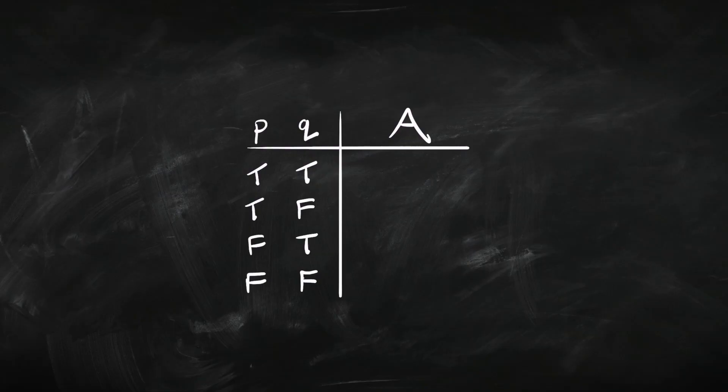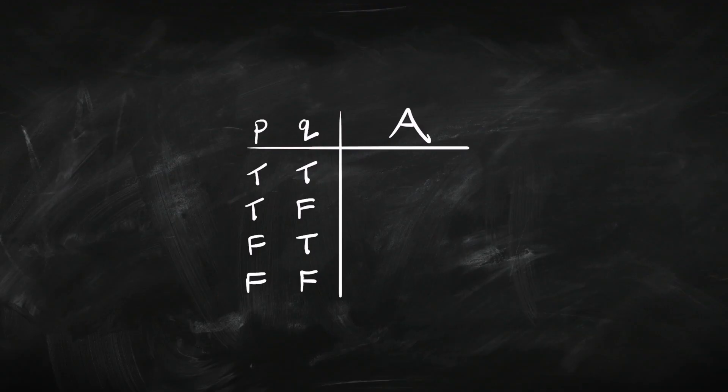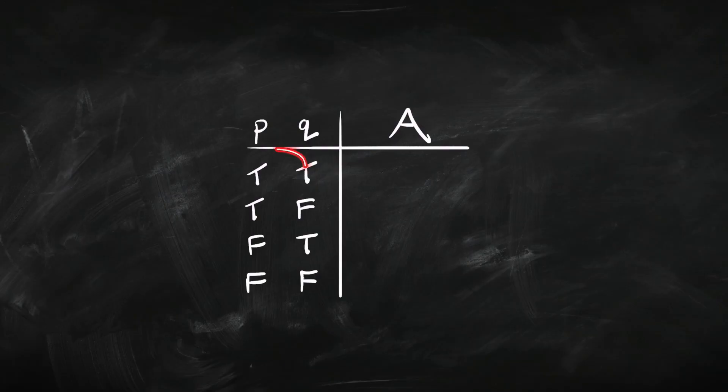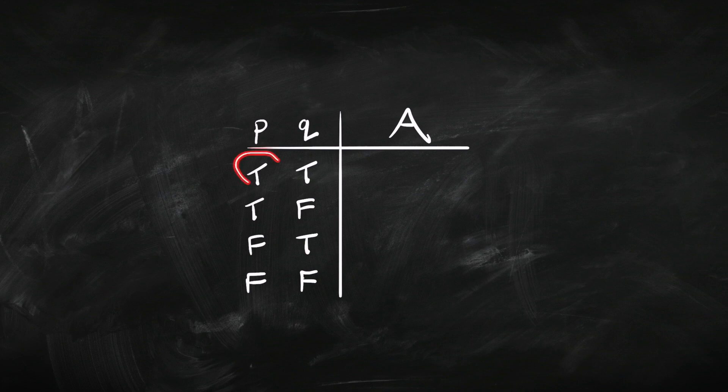Suppose we're interested in some sentence A and suppose that sentence is made up of two sentence letters, P and Q. Since there are two sentence letters, there are going to be four lines in our truth table because there are four different ways of assigning truth and falsity to P and Q: they might both be true, P true and Q false, P false and Q true, or they might both be false. We go through each of those lines and work out: if P is true and Q is true, what's A? We work it out similarly for each combination. How do we calculate what value A should have?